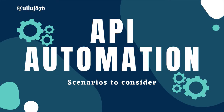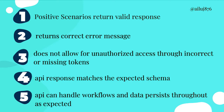Today we're going to talk about automating the boundaries of your APIs. Normally when we're doing automation for APIs, we only check positive scenarios and ensure that we get back a valid response. However, we need to go much further than that — ensuring correct error messages, no unauthorized access without a valid token, schema matching, and checking workflows such as creating a user, doing a GET to verify, then updating or deleting. Today we'll cover these five scenarios.